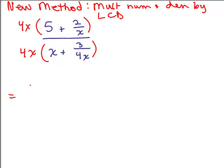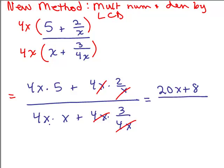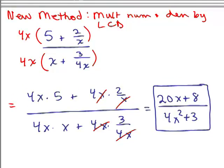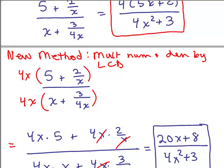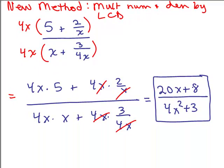Distribute 4x across the top: 4x·5 + 4x·(2/x), and across the bottom: 4x·x + 4x·(3/4x). The x's cancel in the second term of the top, and the 4x's cancel in the second term of the bottom. This eliminates all fractions, giving 20x + 8 in the numerator and 4x² + 3 in the denominator — exactly the same result as Method 1. After this step, factor and cancel if possible. We'll use this new method in the next video.